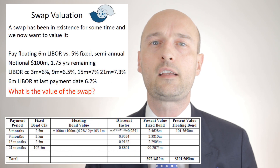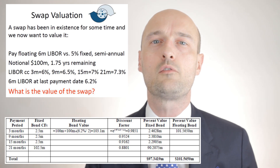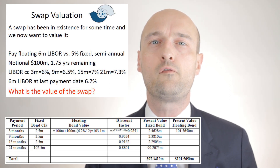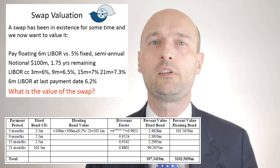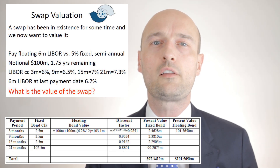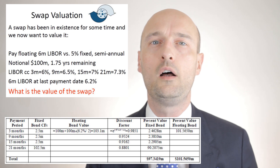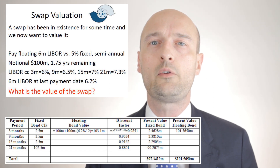On screen you can see the calculations of the bond valuation method. The value to the receive-fixed counterparty is the fixed bond valuation minus the floating bond valuation. We can see that the swap is worth minus $4.22 million dollars; the opposing counterparty will have the opposite value of plus $4.22 million. We put together a table of the expected cash flows for each bond and the timing of the payments remaining. The fixed payments are $2.5 million each period.